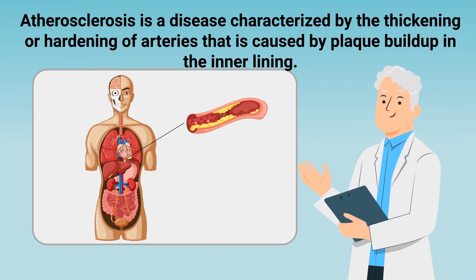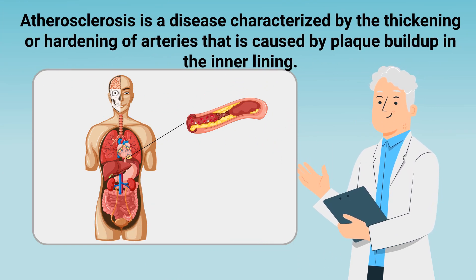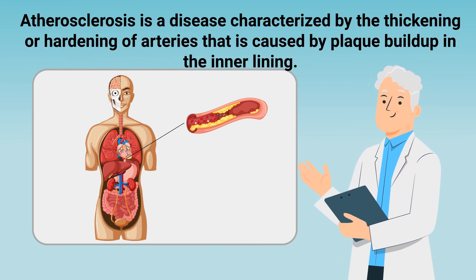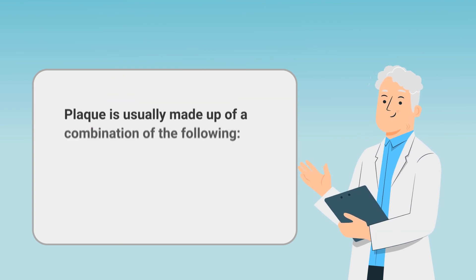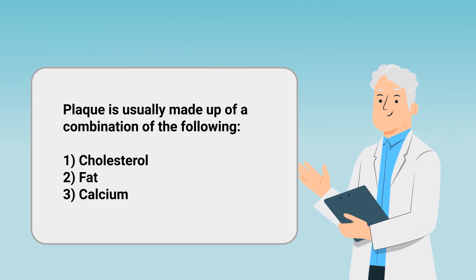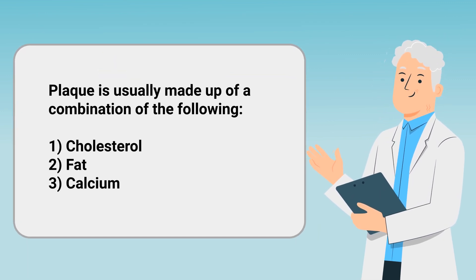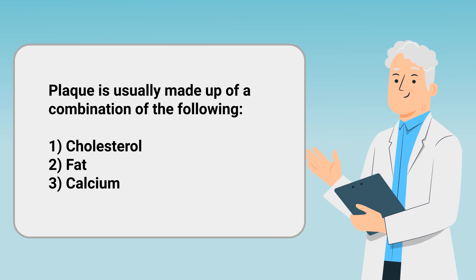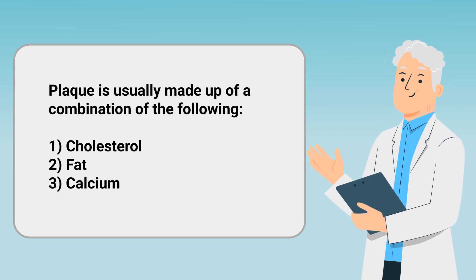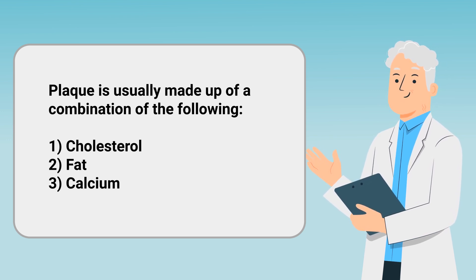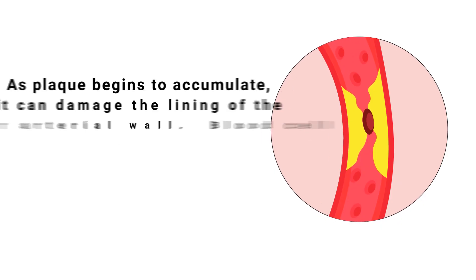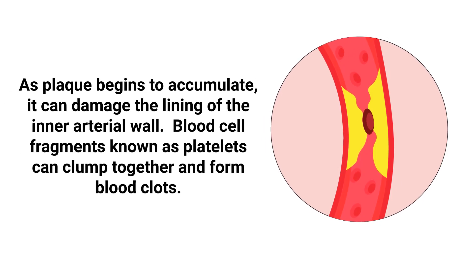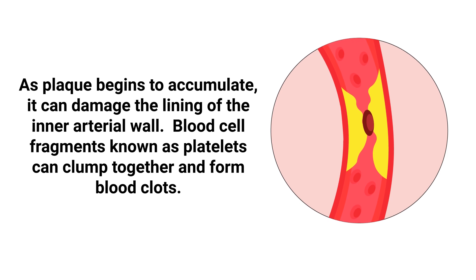Atherosclerosis is a disease characterized by the thickening or hardening of arteries that is caused by plaque buildup in the inner lining. In general, plaque is usually made up of a combination of the following: cholesterol, fat, calcium, and other substances found in the blood. As plaque begins to accumulate, it can damage the lining of the inner arterial wall.